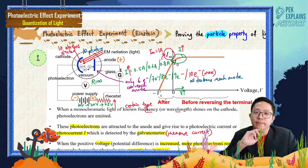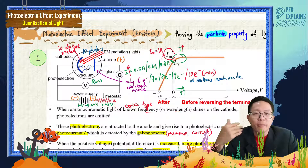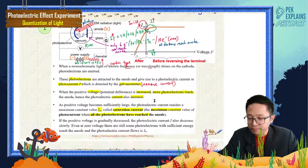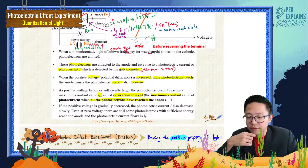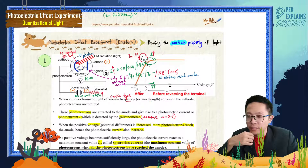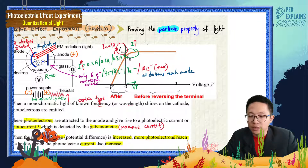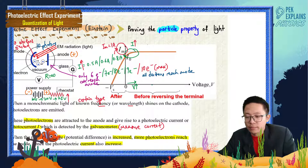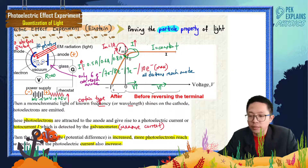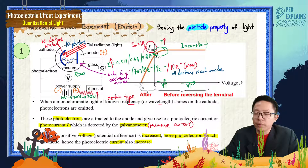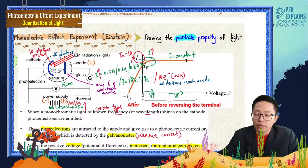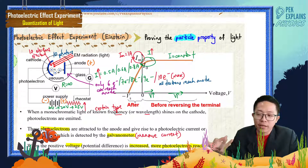The saturation current depends on how many incident photons there are. All the ejected electrons have reached the anode, so there are no more extra electrons to be ejected, and the current remains at its maximum constant value.